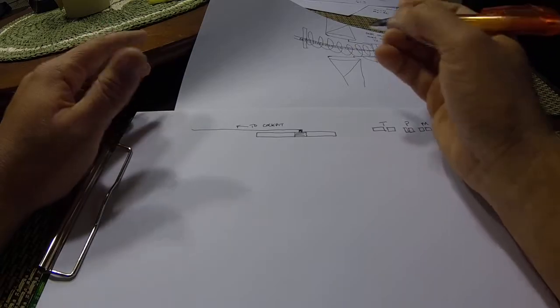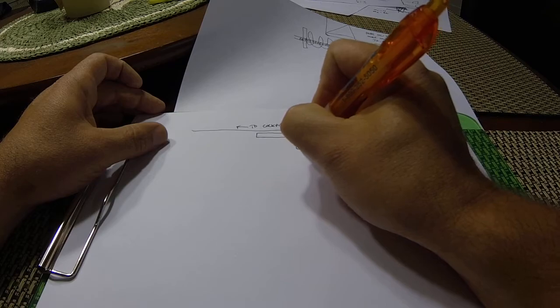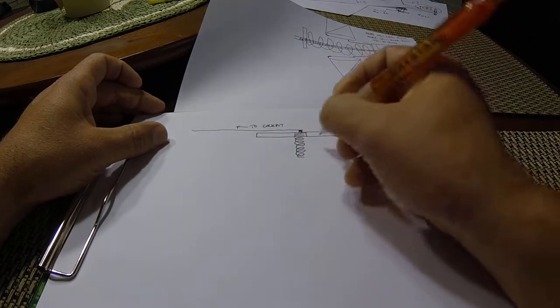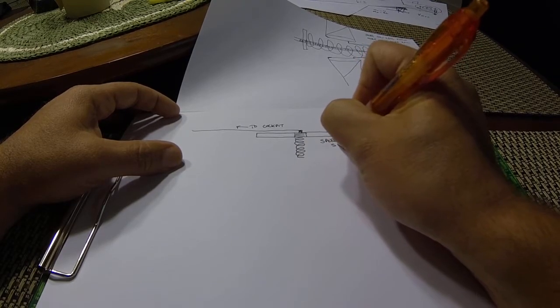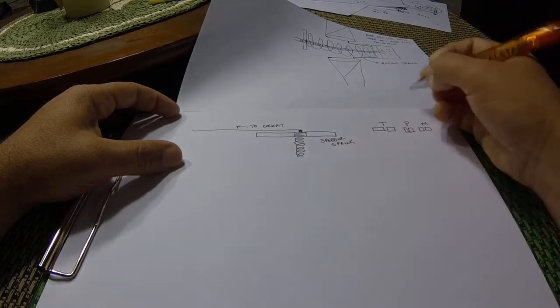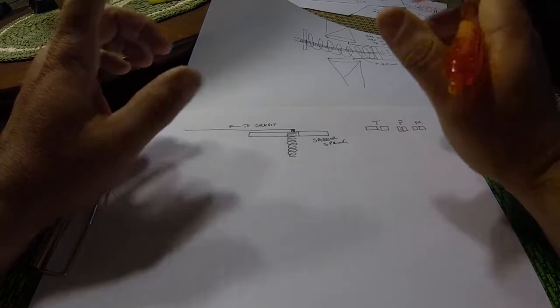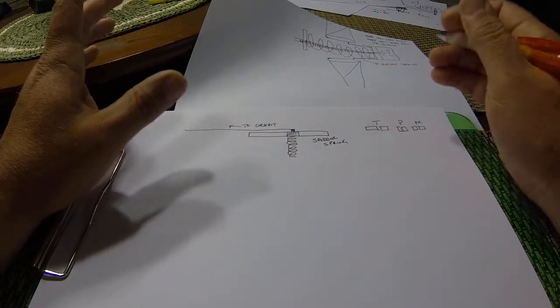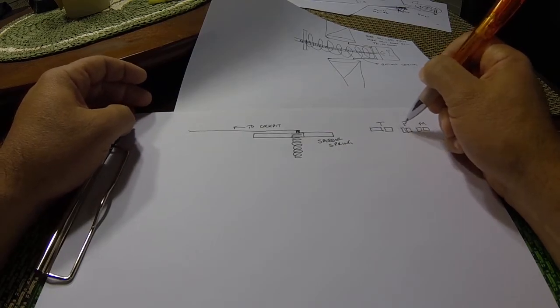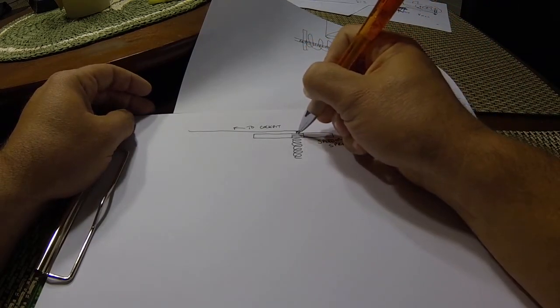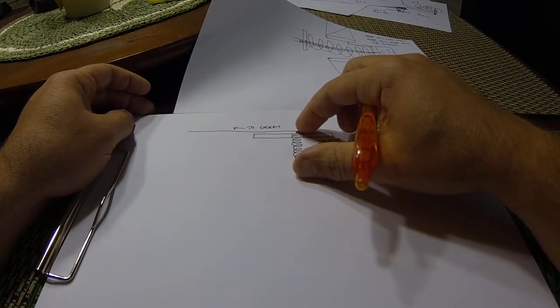The heart of this governor's system is this spring. There is a spring right here. It's called the speeder spring. And what we're doing when we change this lever here, either of these levers. And let me say that each engine, each propeller system has its own governor. So, there's one on the left, there's one on the right. When we change our propeller lever, we are screwing or unscrewing this threaded shaft, which is compressing or relaxing this spring.